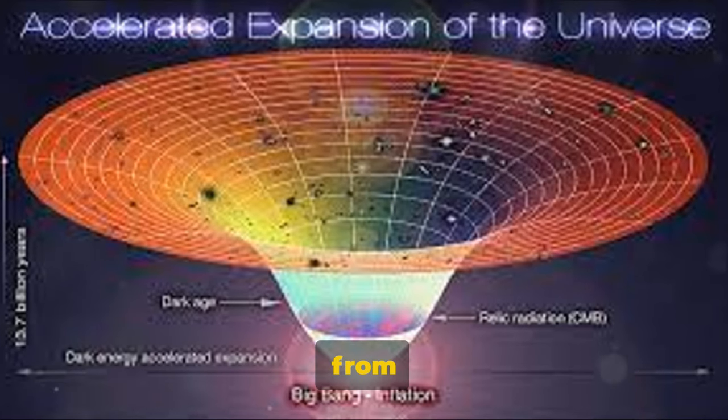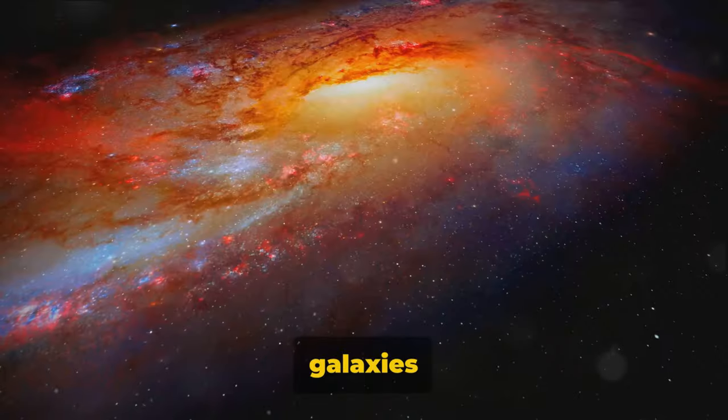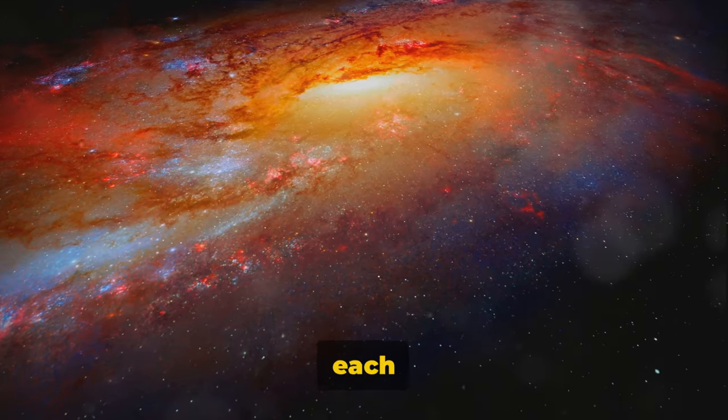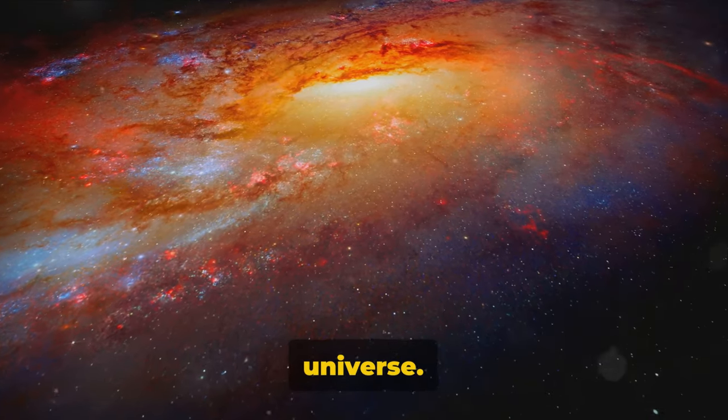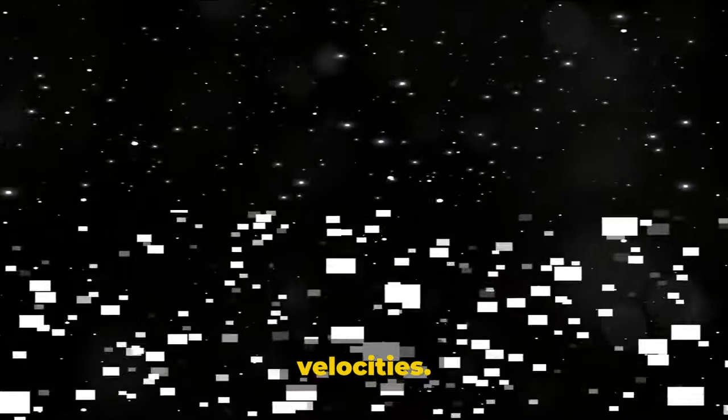This movement was a deviation from what we'd typically expect according to Hubble's law. The law says that galaxies should be moving away from each other due to the expansion of the universe. But here, we saw galaxies moving in a particular direction due to something called peculiar velocities.